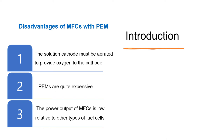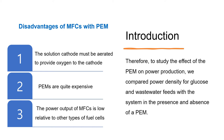However, microbial fuel cells with proton exchange membrane have some disadvantages. The main disadvantage of a two-chamber microbial fuel cell is that the solution cathode must be aerated to provide oxygen to the cathode. It is known that the power output of microbial fuel cells can be improved by increasing the efficiency of the cathode. Therefore, to study the effect of the proton exchange membrane on power production, we compared power density for glucose and wastewater feeds with the system in the presence and absence of a polymeric proton exchange membrane.